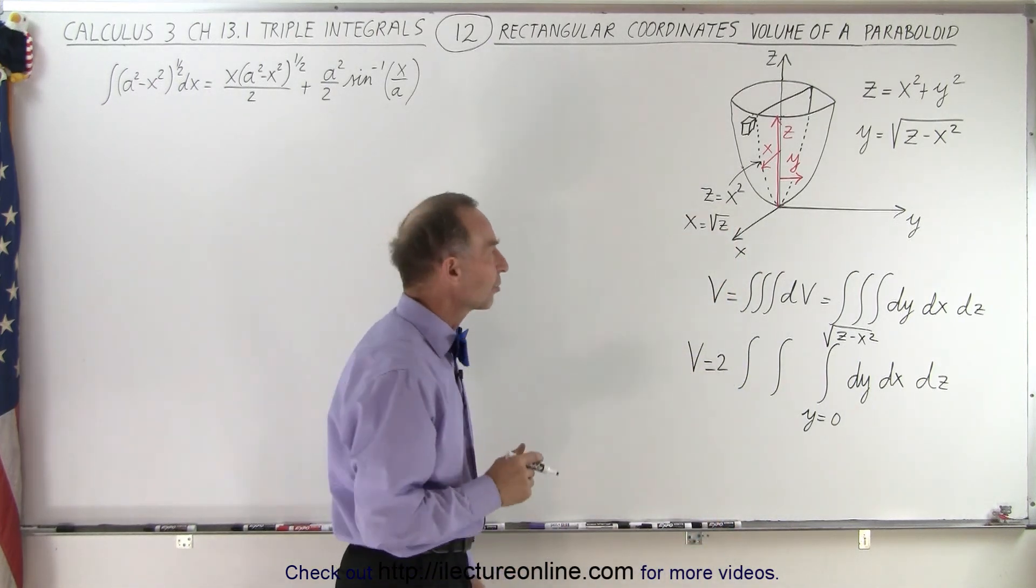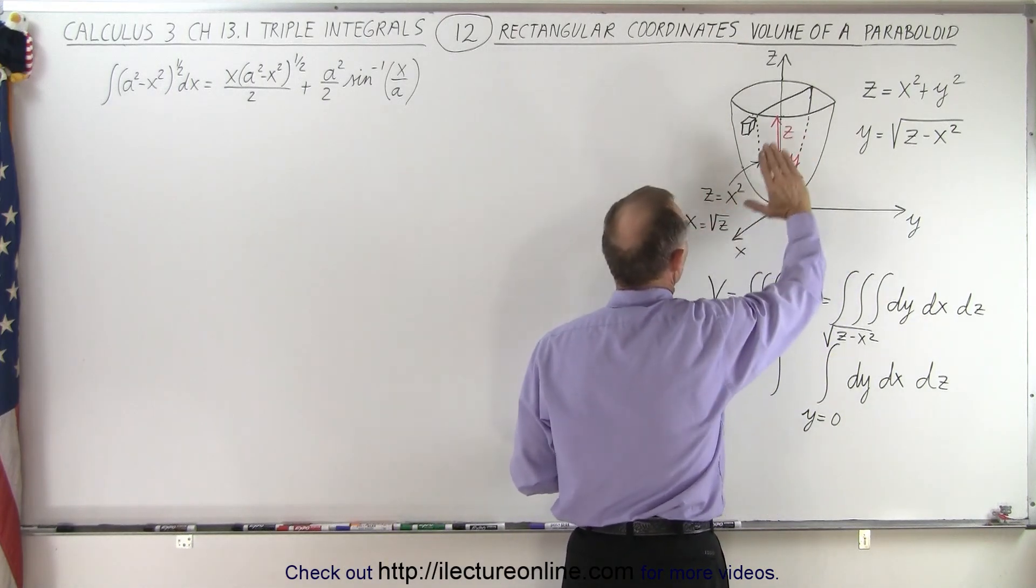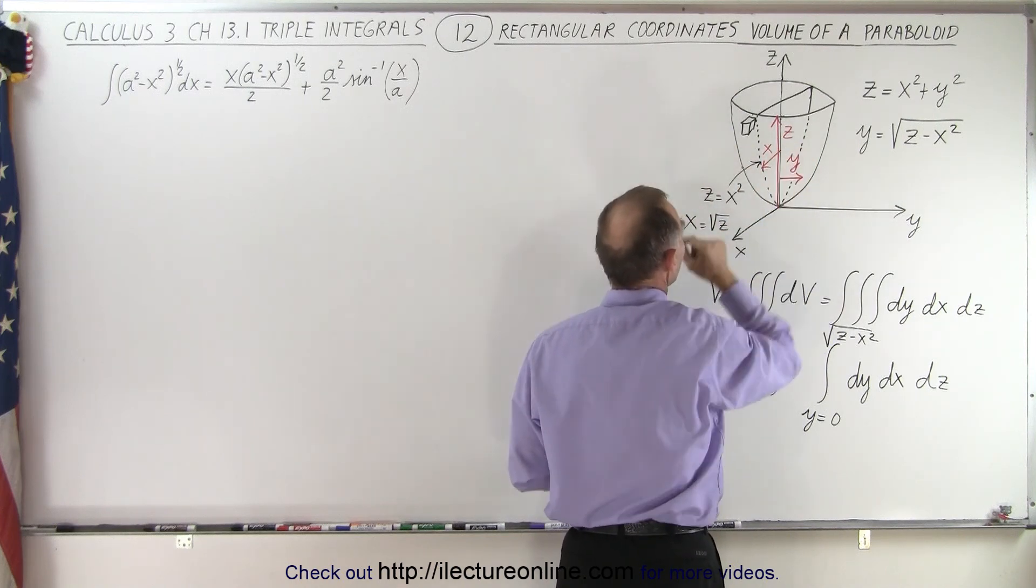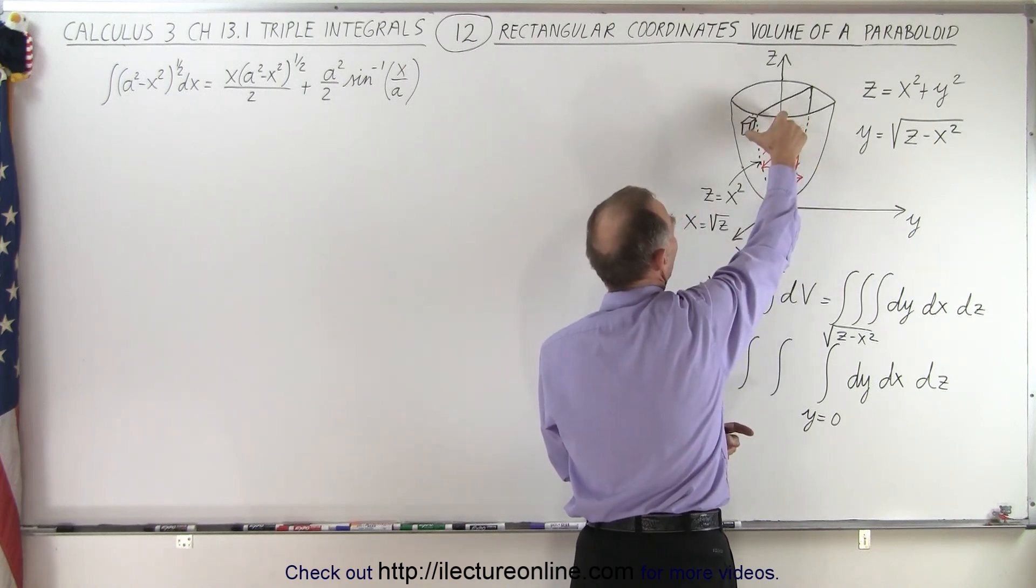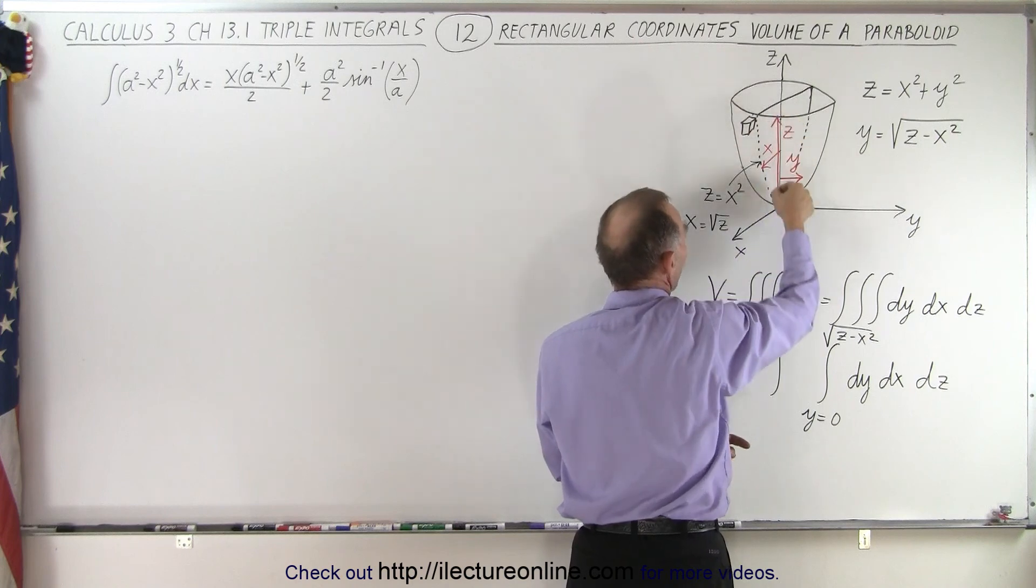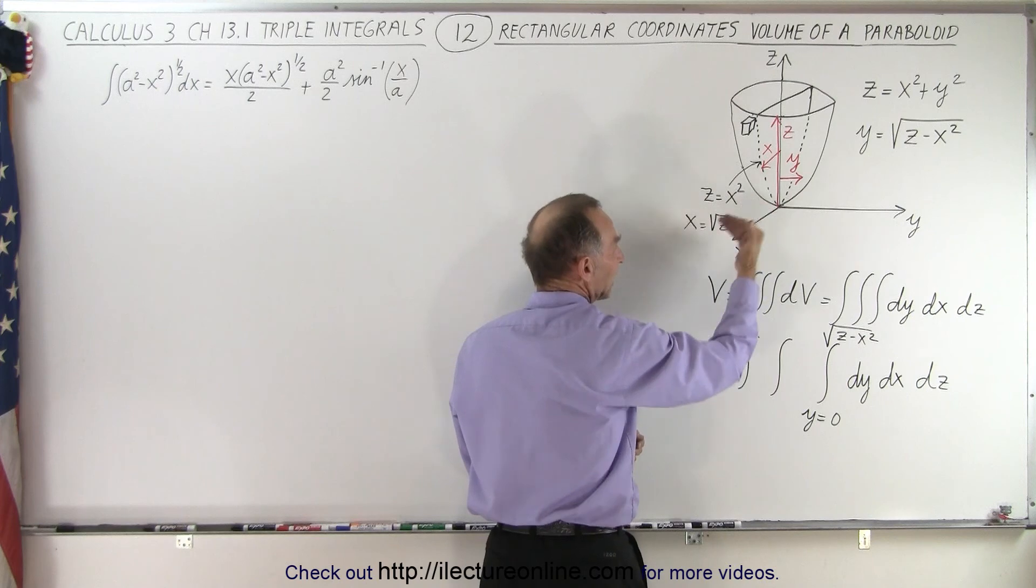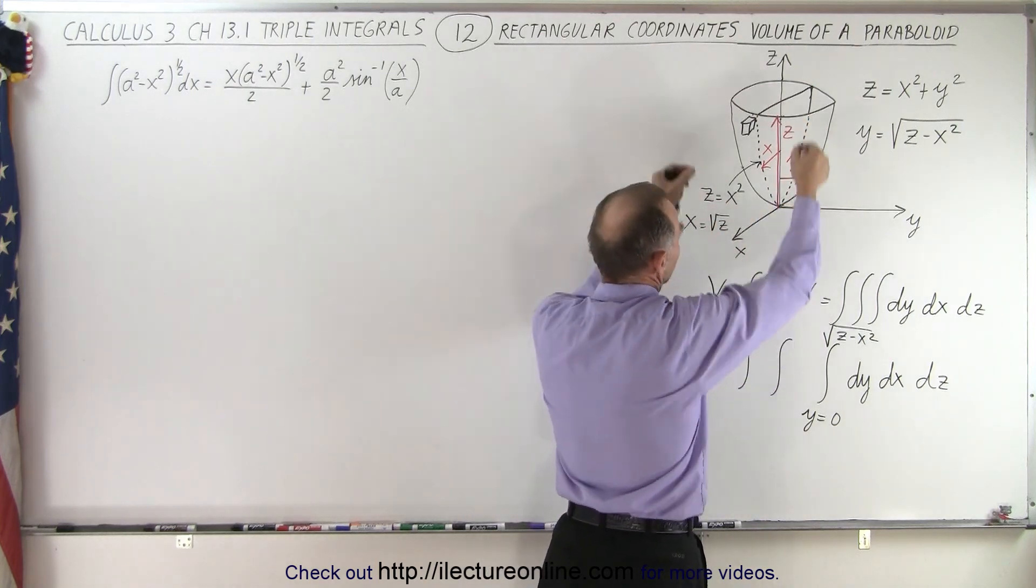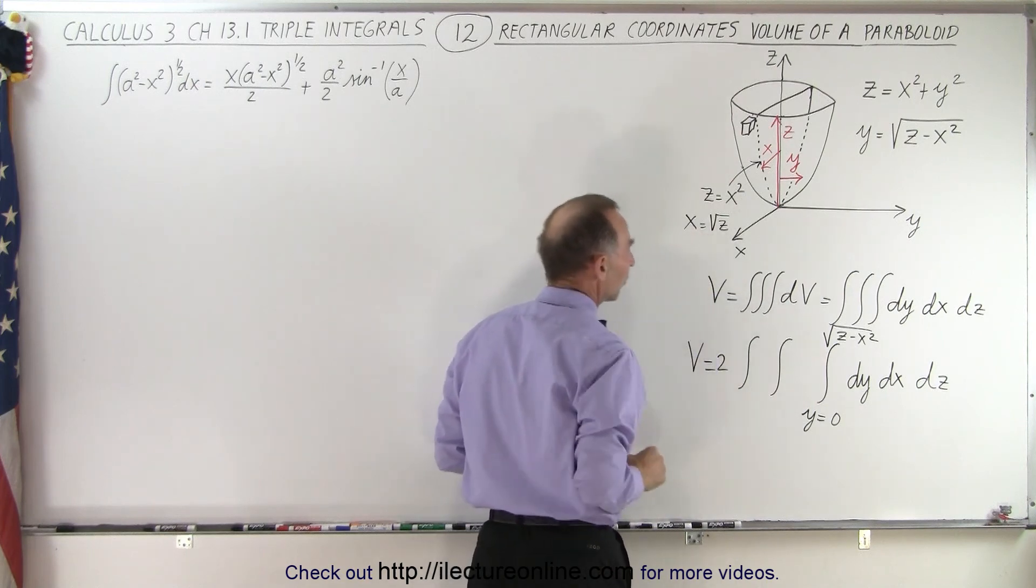Then if we integrate in the x direction notice that if we look at the zx plane right here notice the distance that you go in the z direction does depend upon the value of z. The bigger value of z is the farther you go out in the x direction, the smaller value of z is the shorter distance you go out in the x direction before we hit the edge of that paraboloid. So we can see that there's a relationship where z equals x squared essentially that's a parabola in the zx plane and so x can be written as the square root of z.